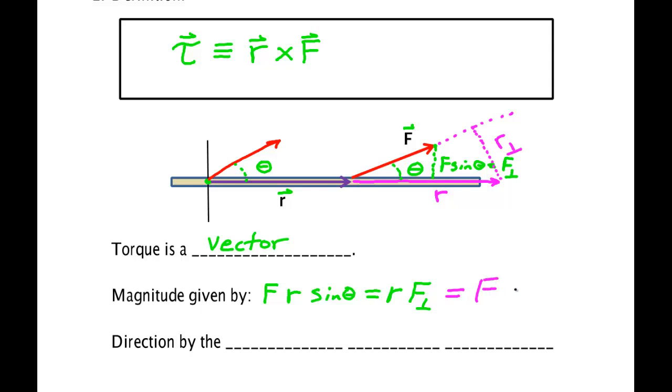It's the force times how much of the distance r is perpendicular to F. This distance r is very important. The further away from the axis of rotation you apply the force, the greater the effective twist. This r is known as the moment arm.